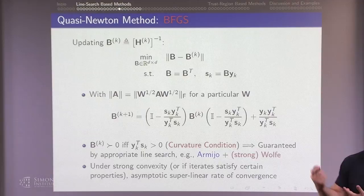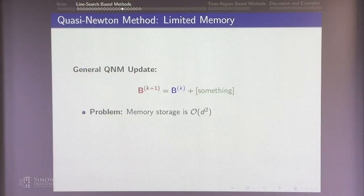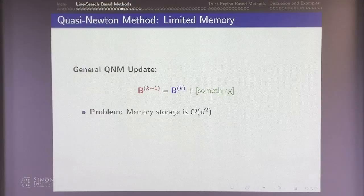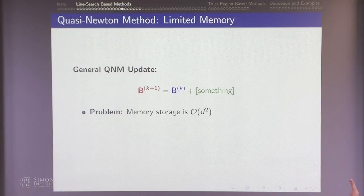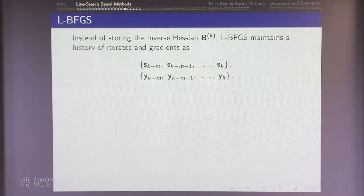This is full BFGS. You might wonder about storage — if D is large, storing a D×D matrix is expensive. Instead, people use limited-memory BFGS, or L-BFGS, which are low-storage methods. Instead of storing the matrix B and updating it directly, they only store a history of the vectors s and y from the last M iterations. Since B depends recursively on previous s and y vectors, B is implicitly defined by all these vectors. When needed, you compute them through a two-loop recursion. L-BFGS has linear convergence — you lose super-linearity, but keep linear convergence.